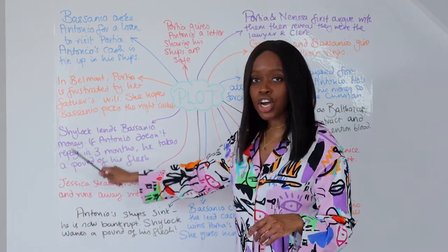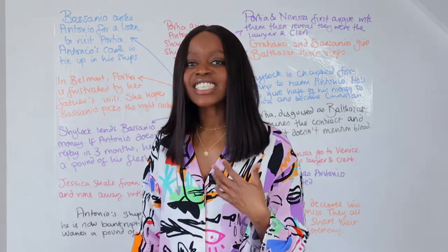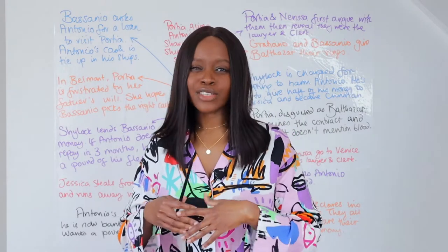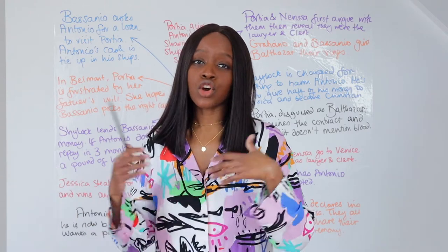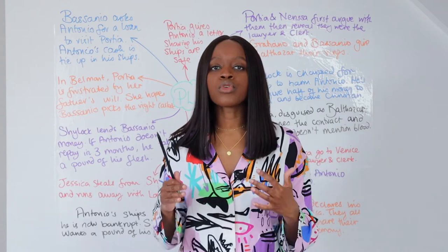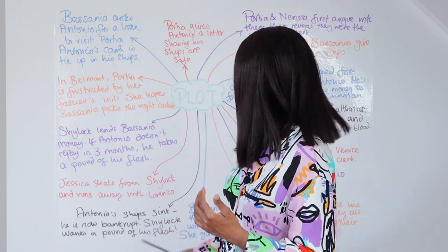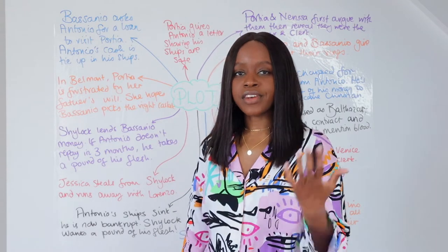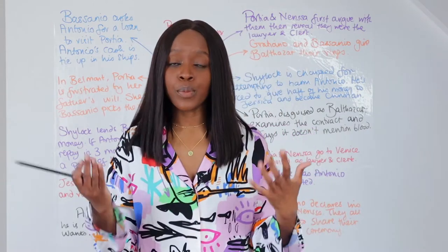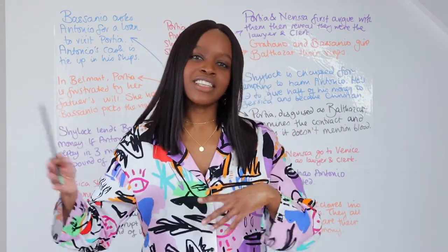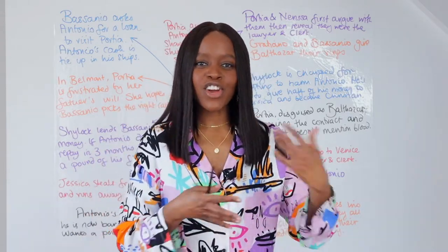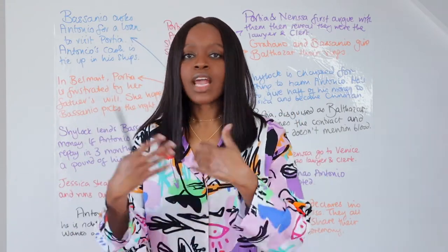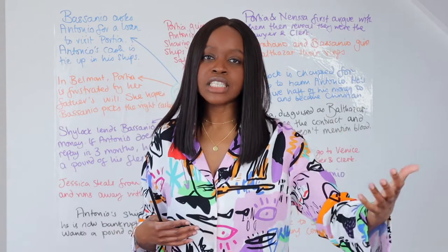We then learn that Shylock, who's basically portrayed as the villain of this play, has a daughter called Jessica. Jessica really dislikes him and sees the house they live in as almost a prison. She really hates her Jewish heritage and is in love with a nobleman called Lorenzo. So she and Lorenzo hatch a plan: Jessica decides to steal Shylock's gold, jewellery, and money. She dresses up as a boy, Lorenzo picks her up in the dead of night, and she runs away with him — they end up eloping, getting married quickly without a traditional ceremony.